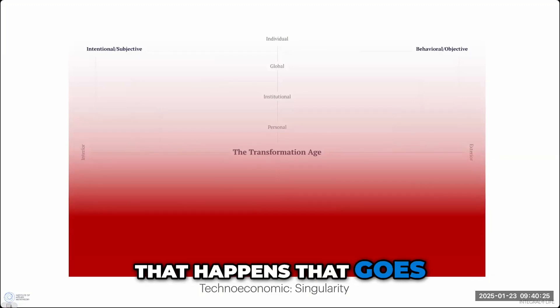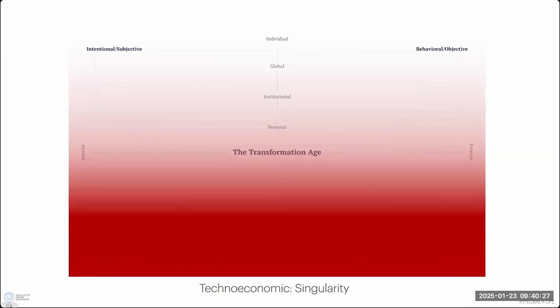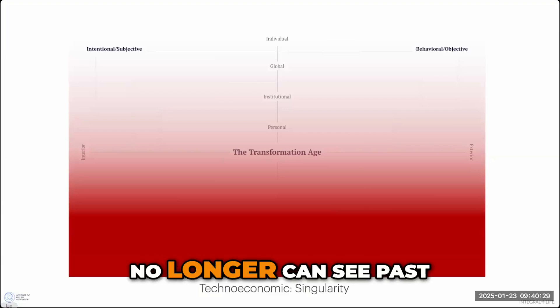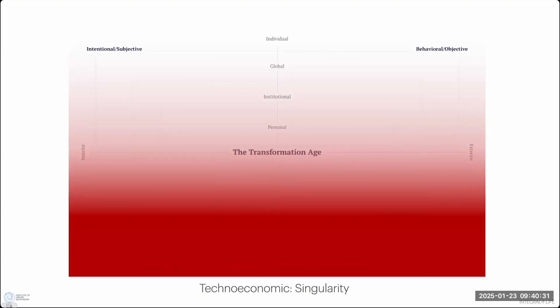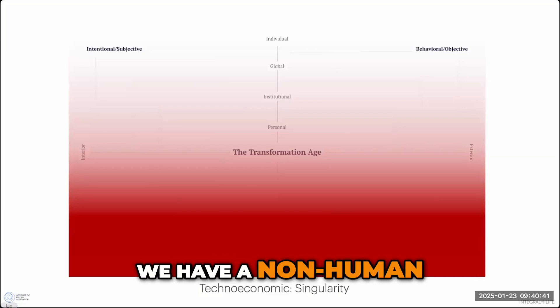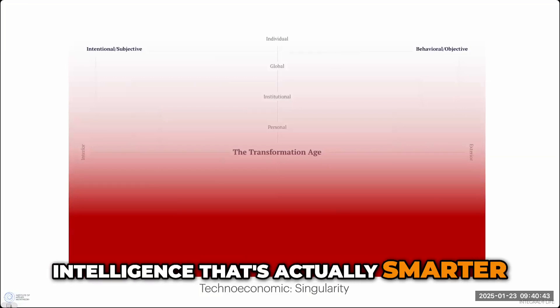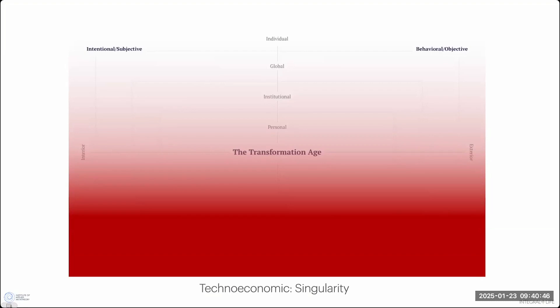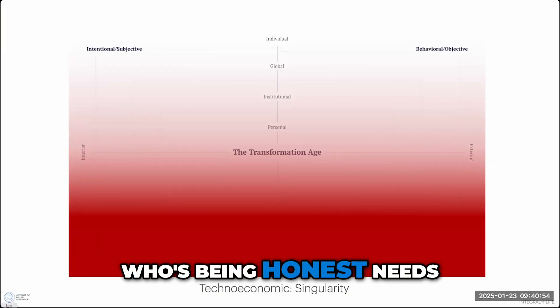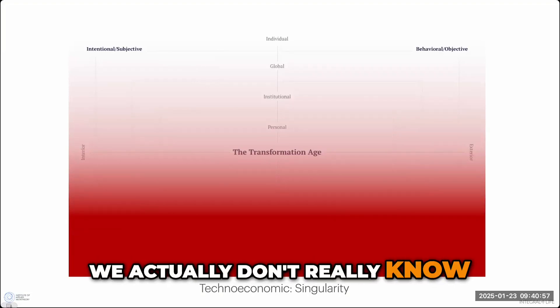And as soon as that happens, that goes nonlinear pretty fast. And at that point, we no longer can see past like an event horizon of a black hole. We can no longer see past what the effects are of that because at that point, we have a non-human intelligence that's actually smarter than us. And what does that mean? And the answer is we don't know. That's why it's called a singularity. And anybody who's being honest needs to say that. We actually don't really know.